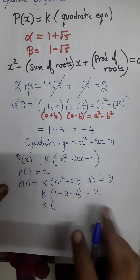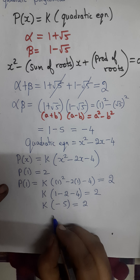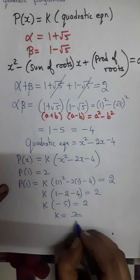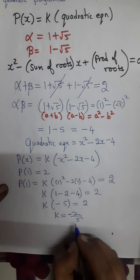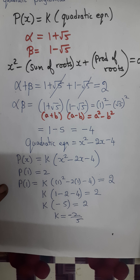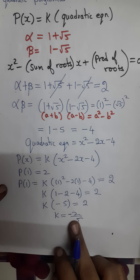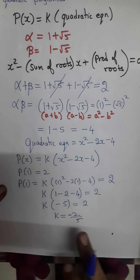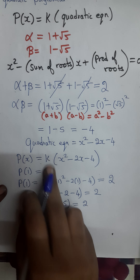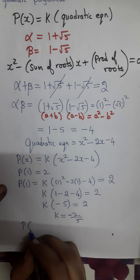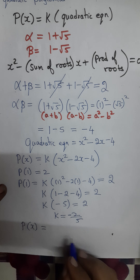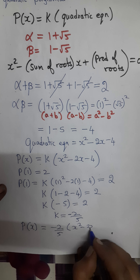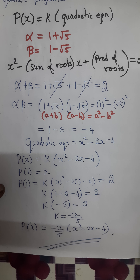So k times minus 5 equals 2, which means k equals minus 2 by 5. Substituting this value of k, we get p(x) equals minus 2 by 5 times (x squared minus 2x minus 4). This is our final answer.